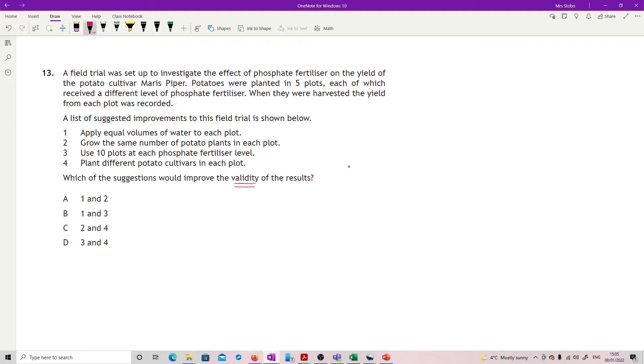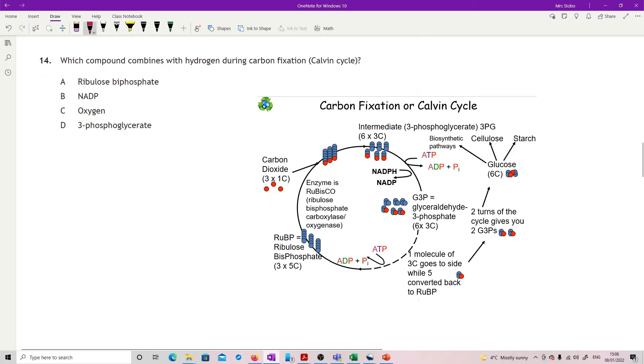We're trying to look at the effect of phosphate fertilizer on yield for the potato cultivar Maris Piper. So why would I use four different cultivars? That can't be right. Ten plots at each phosphate level would actually be a good idea, but that wouldn't increase validity, it would increase reliability. Same number of potato plants in each plot I would definitely need, and equal volumes of water I would definitely need. So our best answer is one and two.